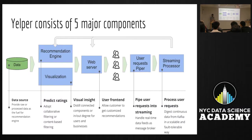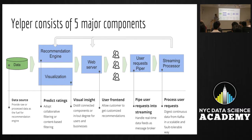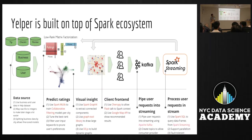These are the overall components of the recommendation system. First we have the data, then we build the underlying recommendation engine. Then we have visualizations to understand the relationship between users and businesses. We need a web server so users can interact with our system. Since we're dealing with huge amounts of user requests, we need to handle a stream — so we're using Spark and Kafka.